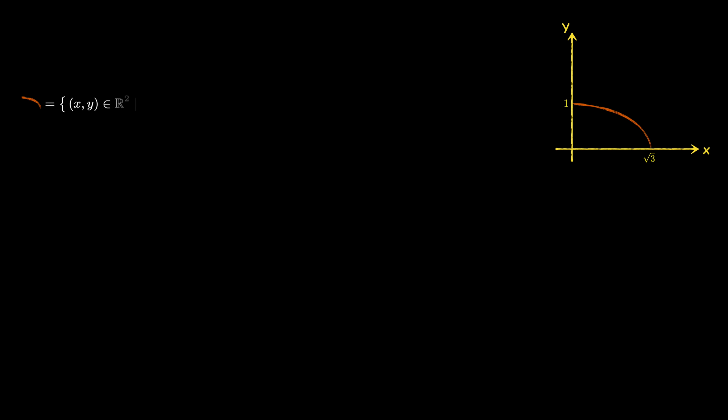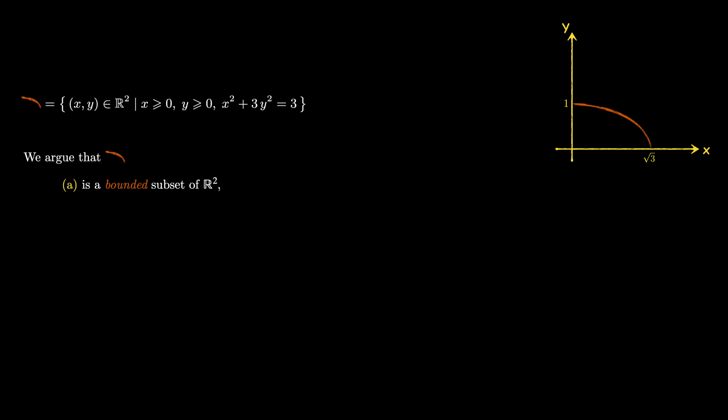The set consists of all ordered pairs (x, y) in ℝ² where x is non-negative, y is non-negative, and x² + 3y² = 3. We argue that this given set is a bounded subset of ℝ². It is also a closed subset of ℝ². To show that this set is bounded, we need to show that it can be contained in a circle centered at the origin.